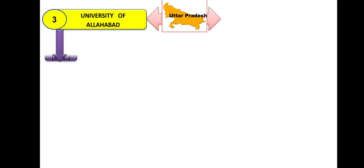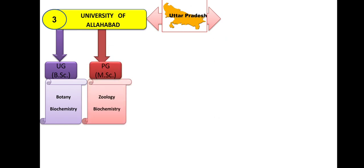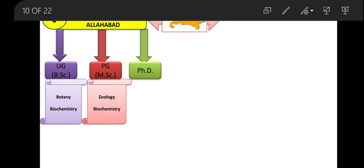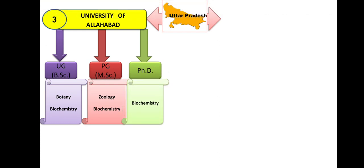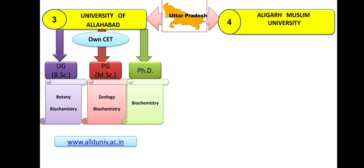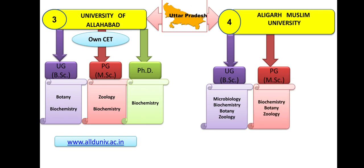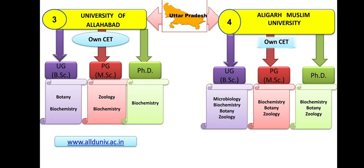Third UP university is University of Allahabad: UG in Botany and Biochemistry, PG in Zoology and Biochemistry, and PhD in only Biochemistry. Admission is through their own entrance. The fourth UP university is Aligarh Muslim University (AMU): BSc in Microbiology, Biochemistry, Botany, and Zoology. MSc in Biochemistry, Botany, and Zoology. PhD in Biochemistry, Botany, and Zoology. They have their own entrance examination.